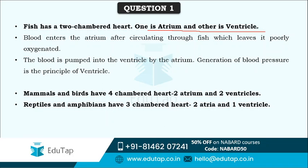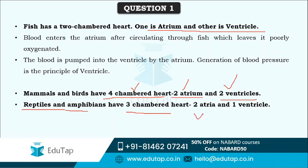When we talk about mammals and birds, those have a four-chambered heart - two atria and two ventricles. Humans are also mammals, so humans also have a four-chambered heart. Reptiles and amphibians have a three-chambered heart: two atria and one ventricle. This is the difference between the hearts of different organisms and you need to remember that.